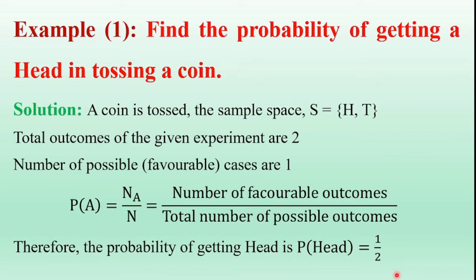Similarly, we can determine the probability of getting a tail in tossing a single coin. Tail occurs only one time, so the number of favorable outcomes are one and total number of outcomes are two. Therefore, the probability of getting a tail is also one by two. So tossing a single coin, the probability of getting a head or a tail is one by two. This is the first example.